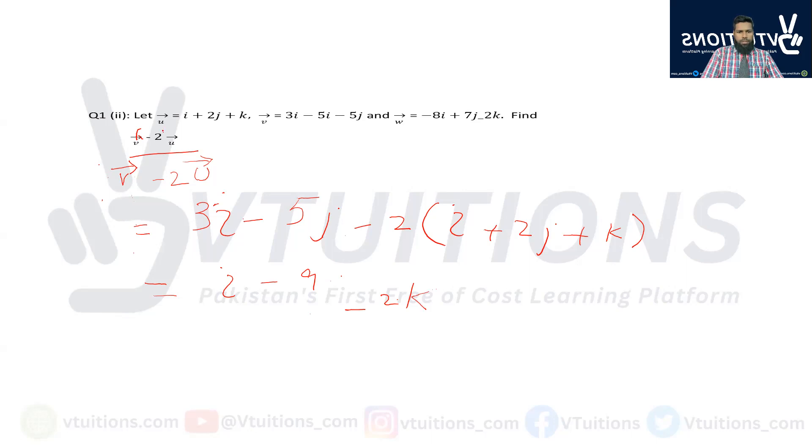So now caps will be put - iota cap, this represents unit vector. Next students, here you see j, this is j, and this one is unit vector. Like this one is unit vector, you can put cap here as well.